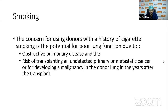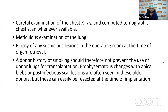Concerning smoking history in donors, the concern is potential COPD in the donor lung and risk of transplanting an undetected primary or metastatic cancer. Since recipients will be under immunosuppression with no immune surveillance over cancer, there are chances an occult malignancy transmitted with the donor lung may later become metastatic. Therefore, careful examination of X-ray and CT scan, meticulous external examination of lung tissue at explantation, and biopsy of any suspicious lesions are recommended. However, a donor's history of smoking should not prevent the use of donor lungs for transplantation.